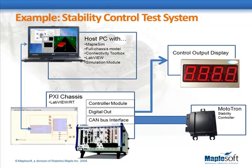The stability controller uses a model predictive control strategy running on a Mototron embedded controller connected to the vehicle model via a CAN bus interface. The required stabilization torque from the controller is shown on an LED display.